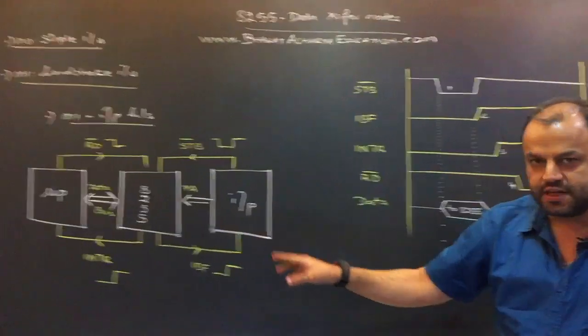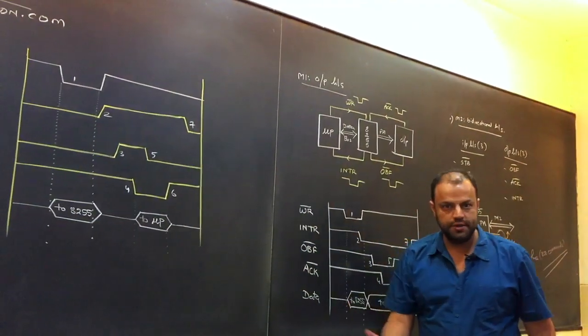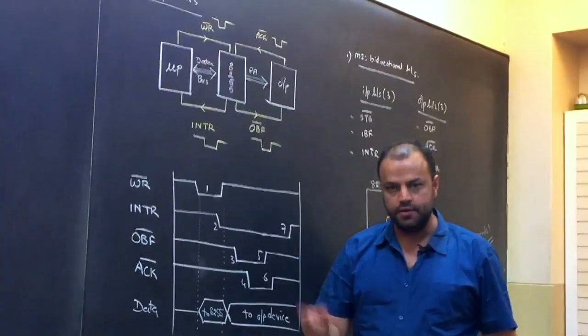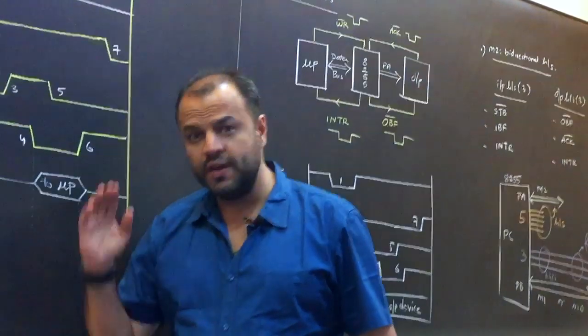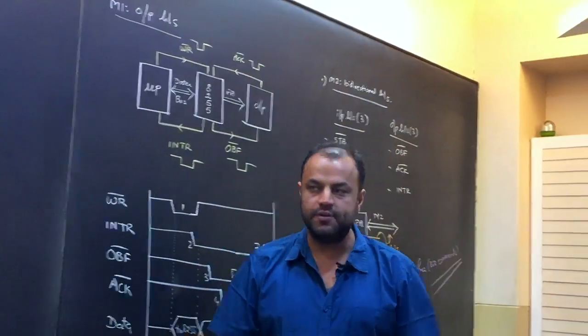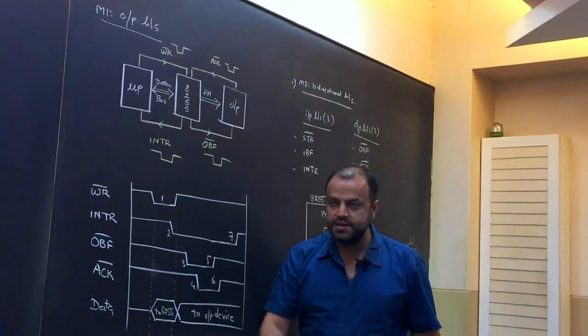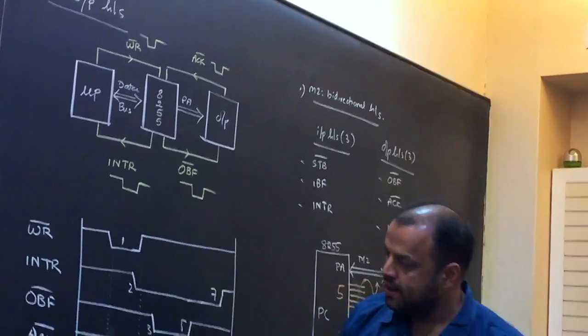So I'm going to teach you the whole concept of handshaking. We're going to start with input handshaking. First, I'll show you all the signals involved, then I'll show you the same thing in the form of a timing diagram, which you need to draw when you're writing the answer. You can't just write theory without the timing diagram. The answer doesn't carry marks. In fact, in Bombay University many times the theory doesn't come at all. They just ask you timing diagram for handshaking input as well as output.